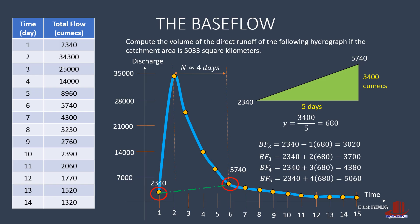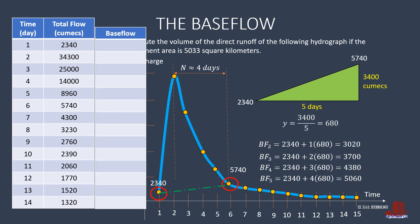Next is to place the base flow values in a table. On the first day, the total flow is also taken wholly as base flow of 2340. From day 2 until day 5, take the computed values earlier, having 3020, 3700, 4380, and 5060. For the sixth day, which is the end of the runoff, the total flow is also considered as all base flow, which is 5740. Then all the succeeding days will all contribute to the base flow.